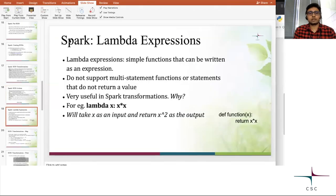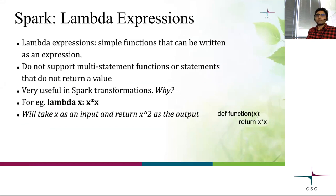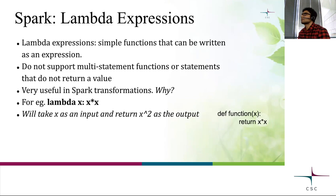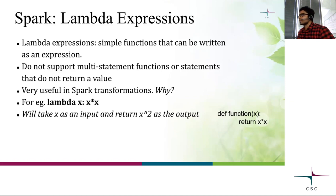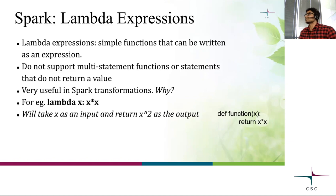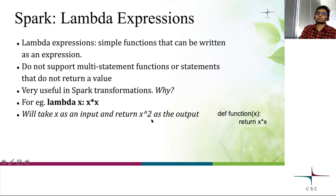Lambda expressions are simple functions that can be written in a single expression format. They do not support multi-statement functions and they have to return a value. They're very useful in Spark transformations because they are mostly one-liners — you don't have to write a proper Python function every time. You can just put one line in your map transformation. This Lambda takes X as an input and provides X times X as output, and it is identical to writing a traditional Python function like this.